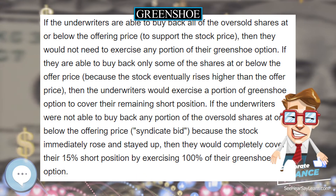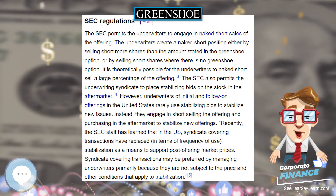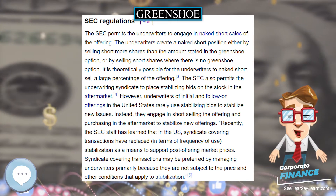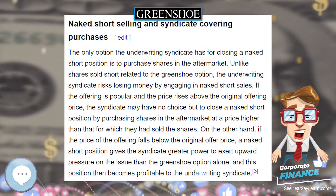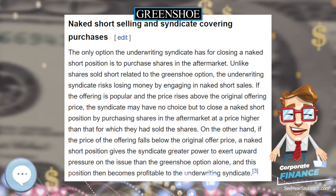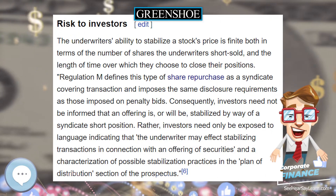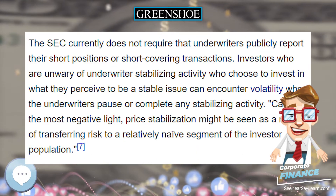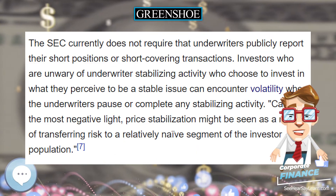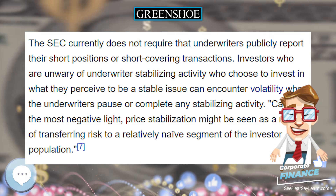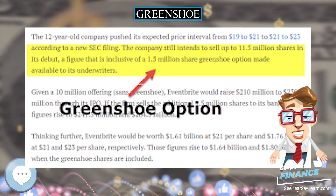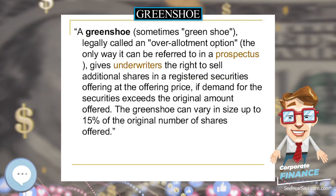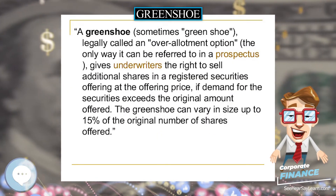When a public offering trades below its offering price, the offering is said to have 'broke issue' or 'broke syndicate bid.' This creates the perception of an unstable or undesirable offering, which can lead to further selling and hesitant buying of the shares. To manage this situation, the underwriters initially oversell — short — the offering to clients by an additional 15% of the offering size.